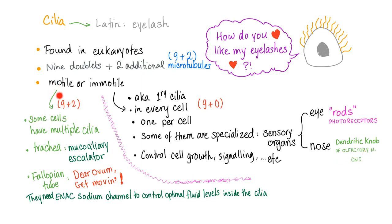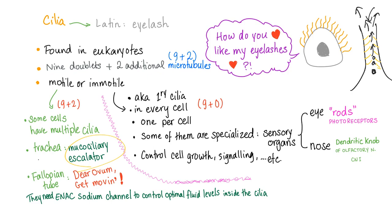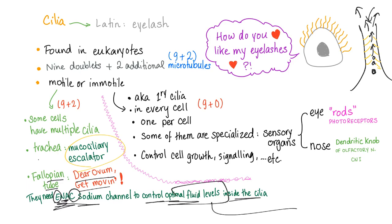On the other hand, motile cilia — some cells have multiple, not just one, such as the trachea. The trachea has cilia in it, and these cilia act as a mucociliary escalator. If there is a foreign body, mucus, or whatever, they will try to extrude it and make it exit your body — acting like an escalator. Also, the fallopian tube has cilia. They need ENAC sodium channels, which are epithelial sodium channels, to control the optimum fluid level inside of the cilia. Any problem with this will lead to a problem, as I will discuss later.